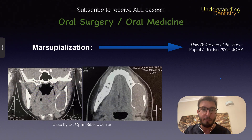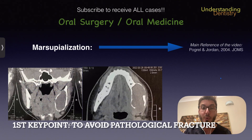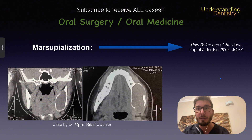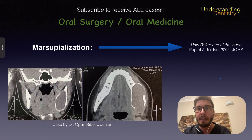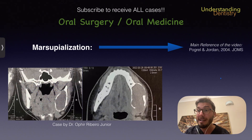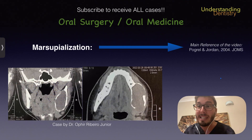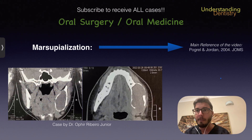We have three key points here, and the first key point is that this procedure is recommended when we want to avoid pathological fracture. We have this case from Dr. Ophir Ribeiro Jr., a very good friend of mine. We are seeing a medical CT exam, and we have expansion of both buccal and lingual plates — a radiolucent or hypodense lesion, homogeneous, with expansion of buccal and lingual plates in the posterior left mandible.